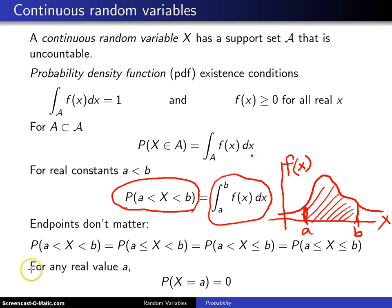And related to this, of course, is for any real value A, the probability X is equal to A is zero. And this is analogous to skating on the pond and falling at a particular spot.